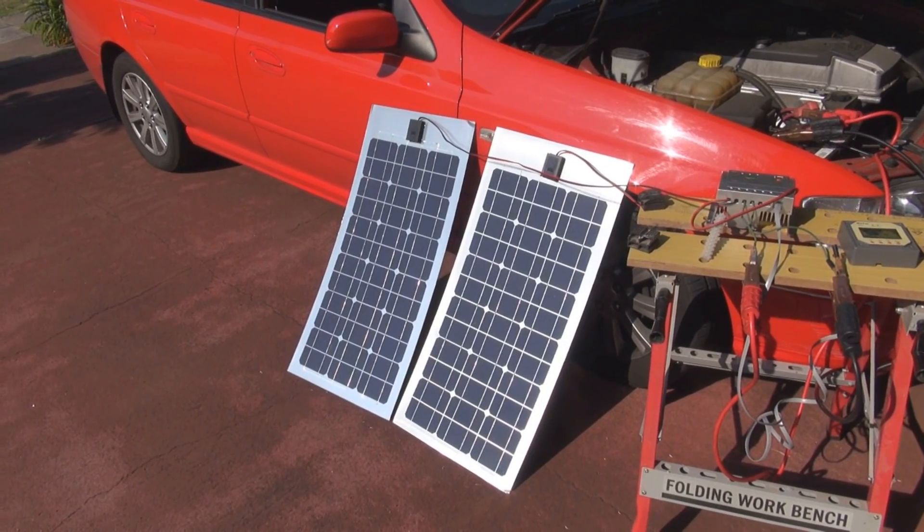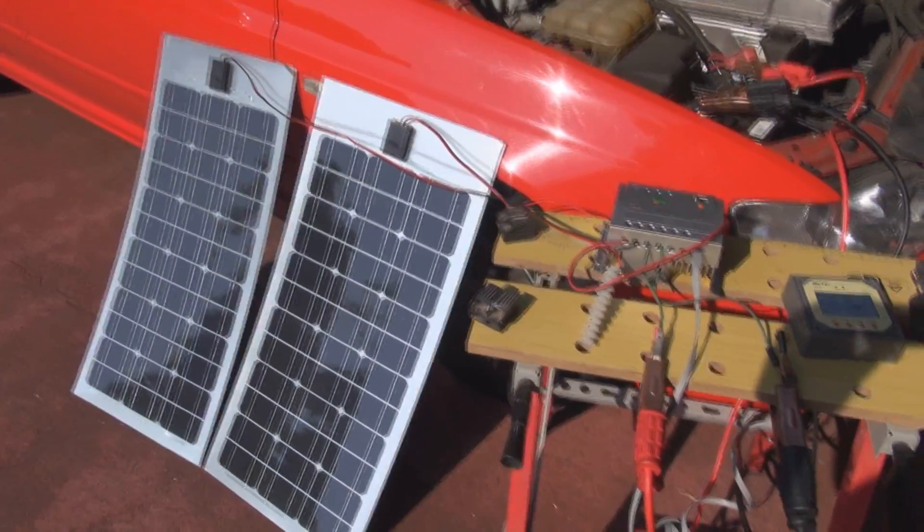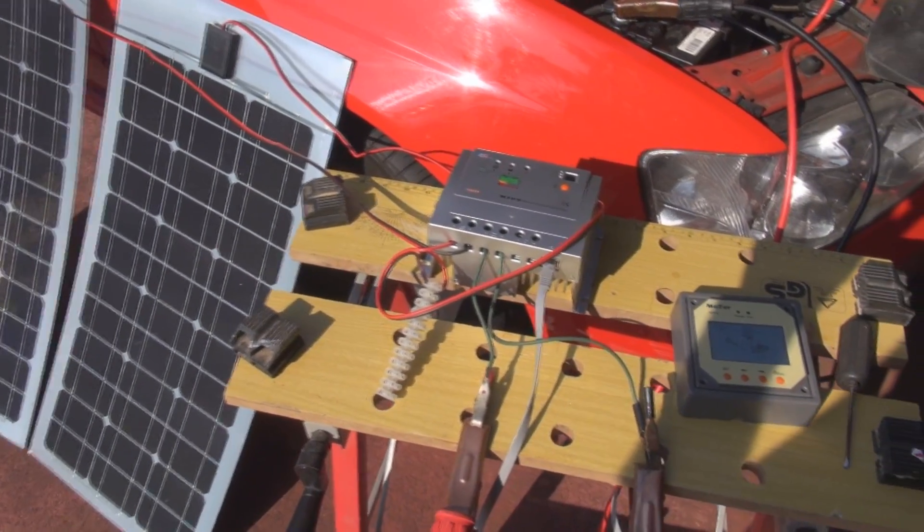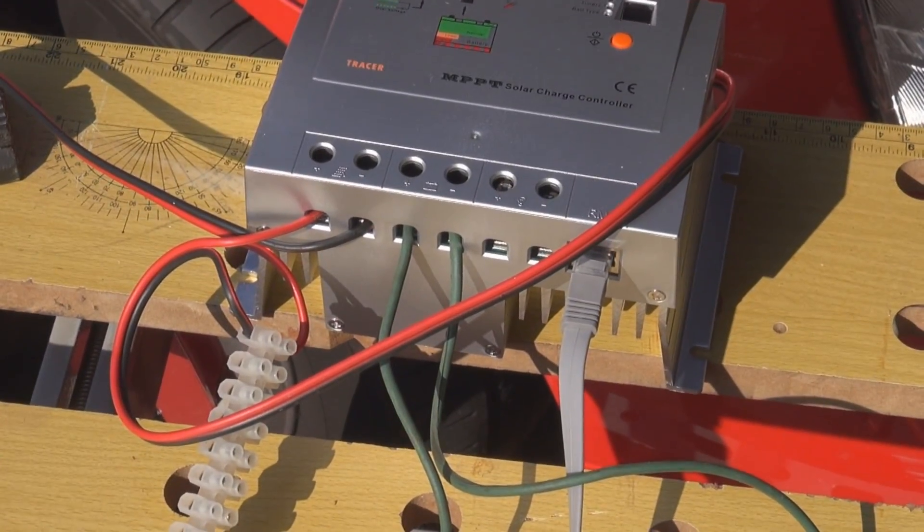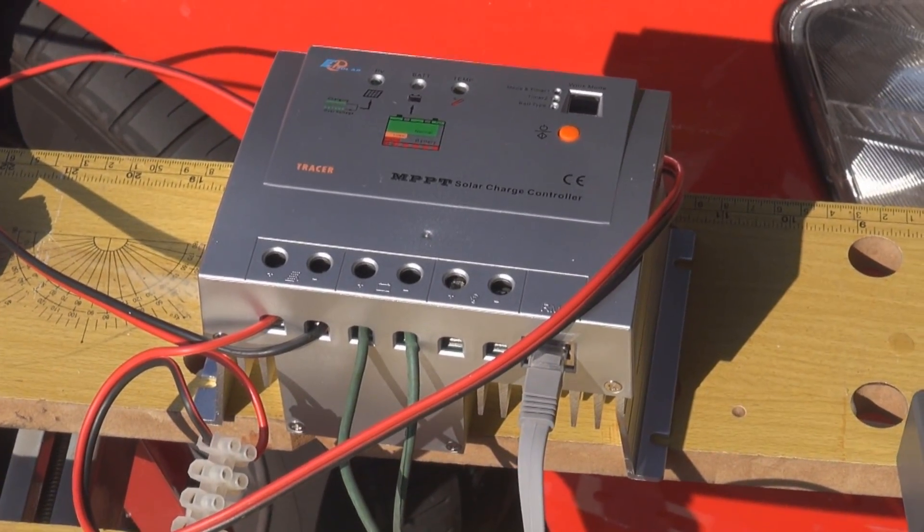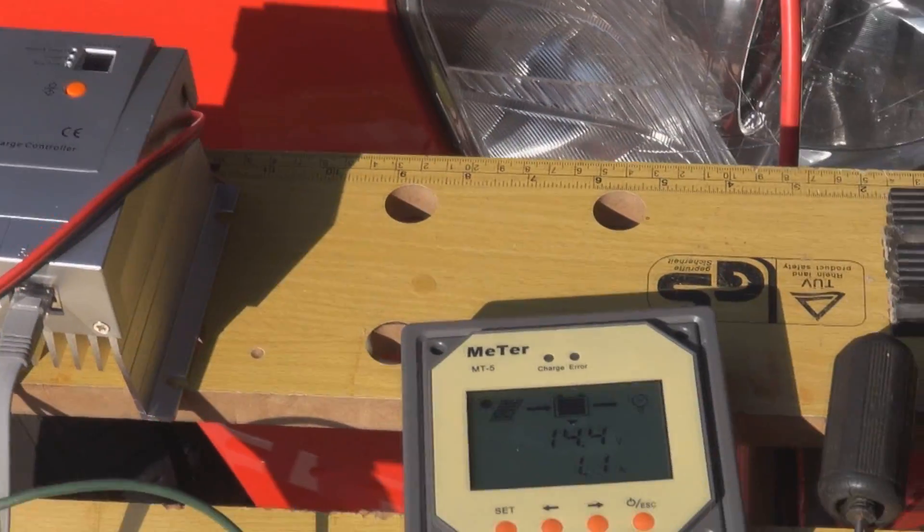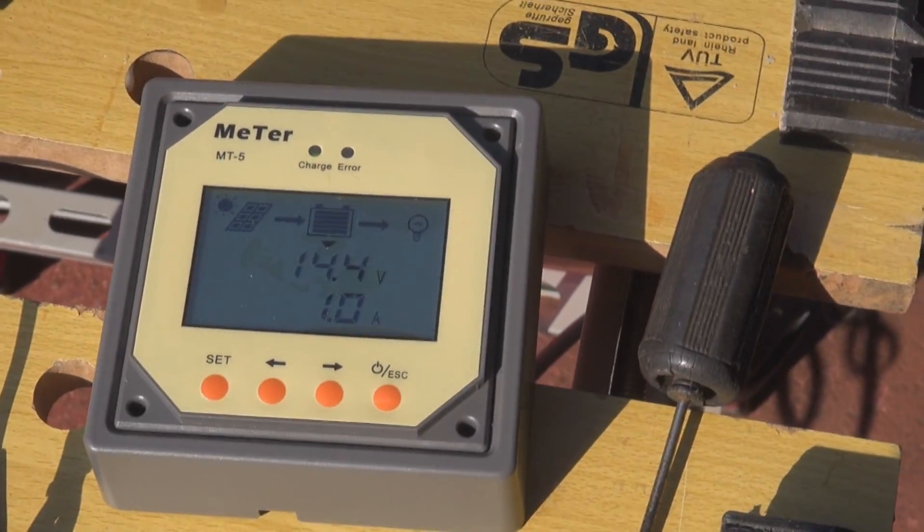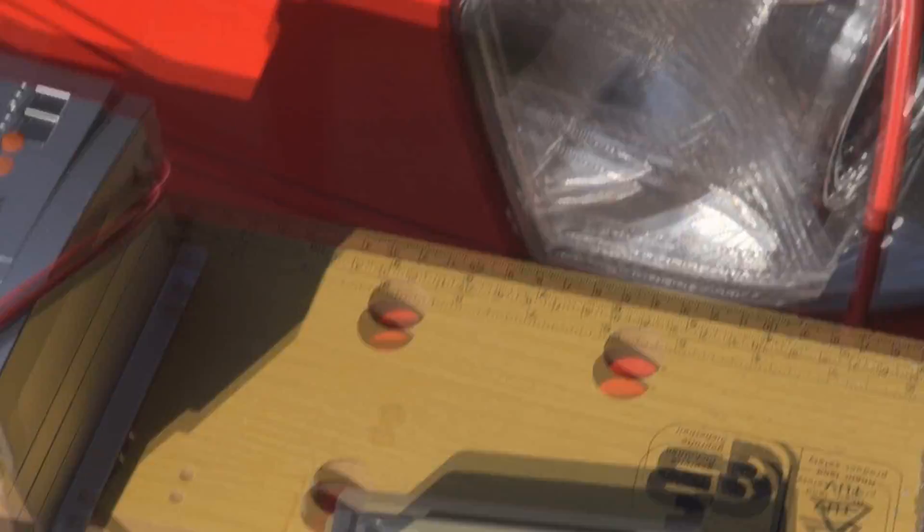Here we have two 50-watt panels wired in series into the MPPT controller, and connected to that is a meter which will tell us what's going on. All of the battery side is connected to this car.